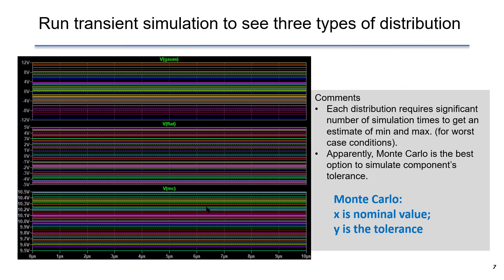We run the transient simulation, and we see three different distributions in the plot. The first one is Gaussian. We can see that there are more samples around the mean, around zero, because it has higher probability density. For uniform distribution in the middle and Monte Carlo, we can see that the samples are pretty evenly distributed among the data range.